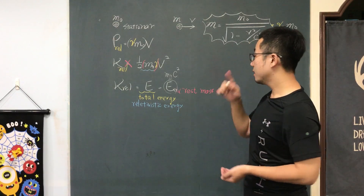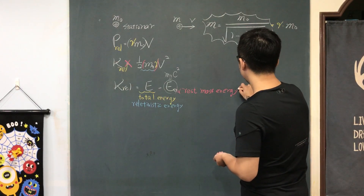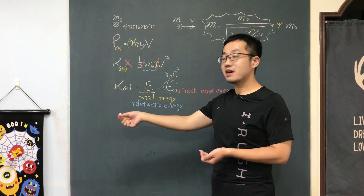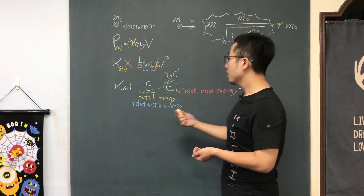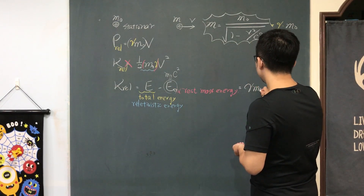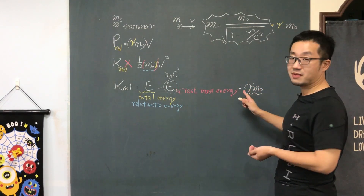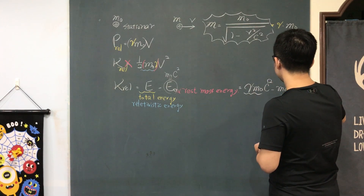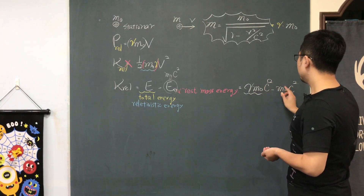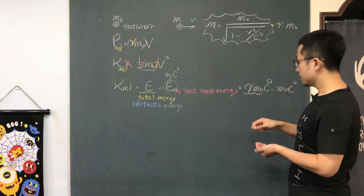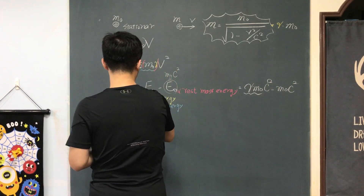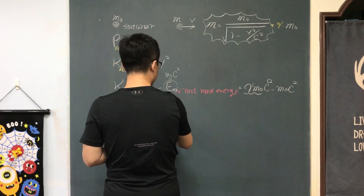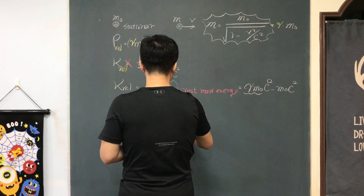The total energy can be expressed as the enhanced mass times c², which is gamma times M₀ times c². So the relativistic kinetic energy is gamma times M₀c² minus M₀c², which we can factor as M₀c² times (gamma minus 1).